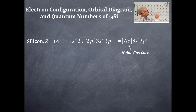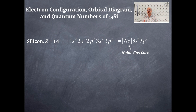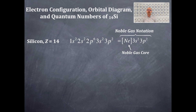When I write neon in brackets, that means I've included all the electrons up to and including neon — that is 1 through 10. Neon is all the way up to atomic number 10. So I've counted all the way up to 10, and after that I'm going to do 3s2, 3p2. This whole thing with the neon core is called the noble gas notation of silicon. I'll be using noble gas notations a lot going forward because it's much easier.